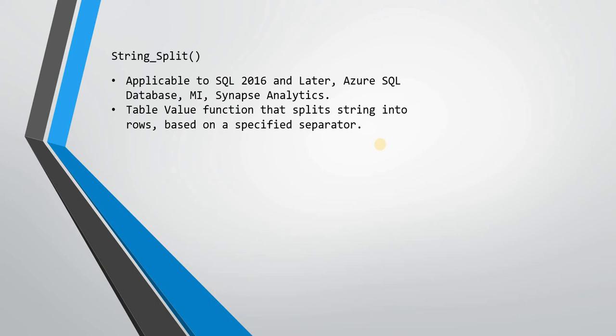In our applications, many times it is needed that you may store comma-separated values into a single column, but while processing you want to separate those values into different rows. Up until SQL 2016, a lot of user-defined functions were written by development teams, but from 2016 onwards Microsoft came up with this native function called STRING_SPLIT, which divides and separates out values from that column.